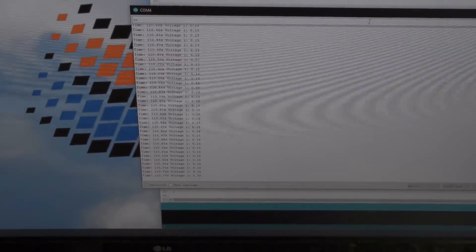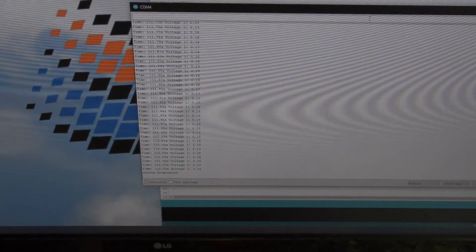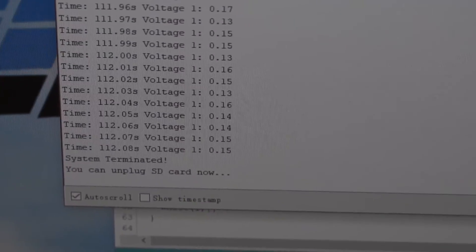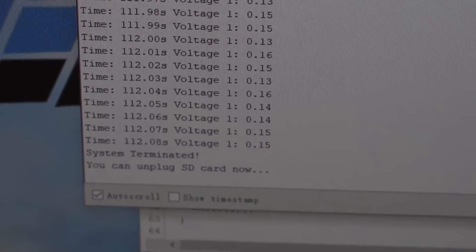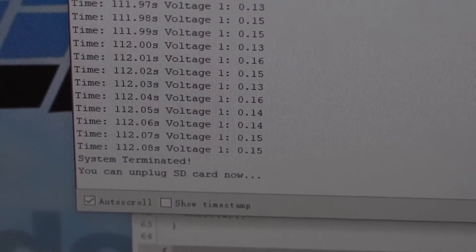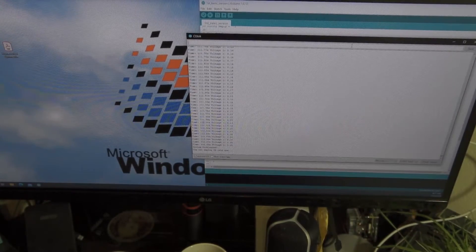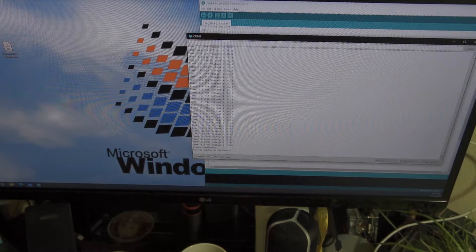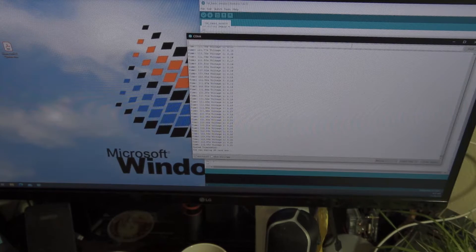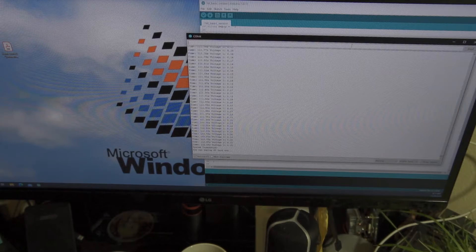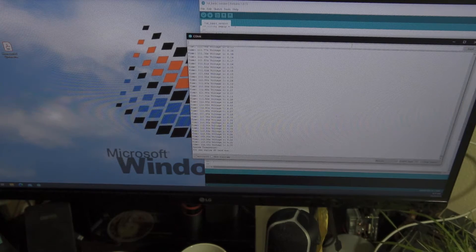Maybe I just typed CO for it. So I just press Enter. It will say the system is terminated and now you can unplug the SD card. So let's unplug the SD card. You just put it onto a card reader and connect it to the PC.